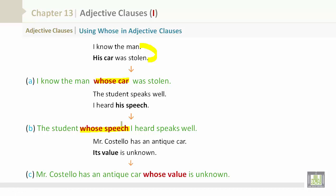Mr. Costello has an antique car, its value is unknown. To combine both of these sentences, you would say, Mr. Costello has an antique car whose value is unknown.